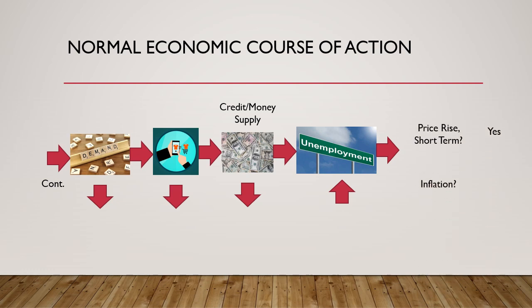In the short term the price is rising, but inflation is not really rising — because there's a difference between inflation and price rise. Inflation is the rise in money supply relative to goods and services; price rise is just one of the consequences of inflation. So overall inflation does not really rise, as in the medium term the credit or money supply is going down. Growth slowdown yes, but stagflation is not occurring in a normal course of economic action.